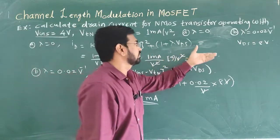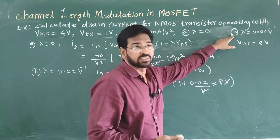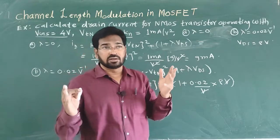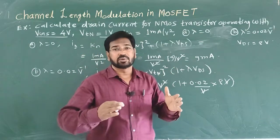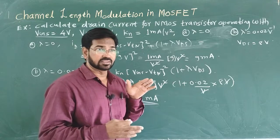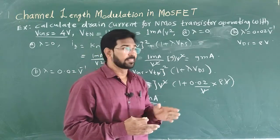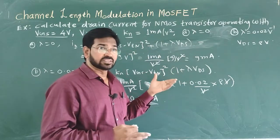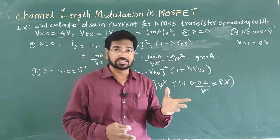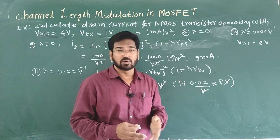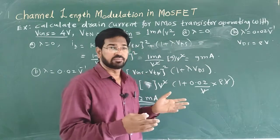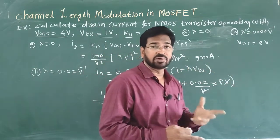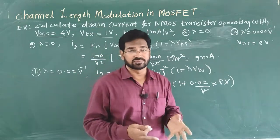This is the effect of lambda, the channel length modulation parameter, on the drain current, and it exhibits how drain current depends upon VDS. Because of that, we get a slight positive slope for the VI characteristic, and this lambda is a very important parameter — it decides the finite output resistance, which is a non-ideal characteristic of MOSFET. We will derive the equation for that, and there you will understand the role of lambda on the finite output resistance of MOSFET.